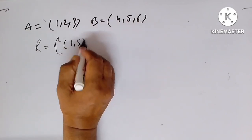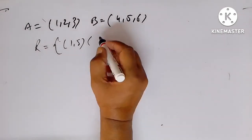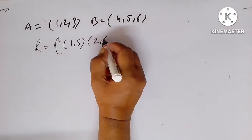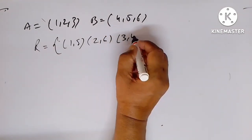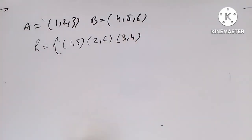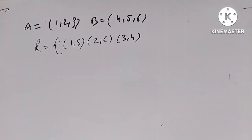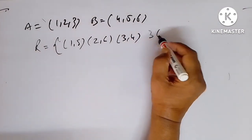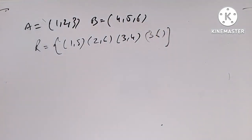Let us see another example. R is equal to {(1,5), (2,6), (3,4), (3,6)}. Is this a relation or not?